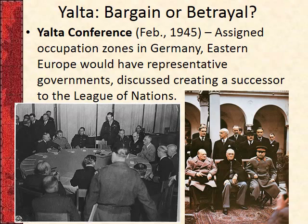Various other things were discussed — the Korean Peninsula came up, with different zones of control established there as well. Eastern Europe would be under the influence of the Soviet Union because the Soviets wanted to create a buffer between themselves and Germany — they'd been invaded twice by Germany in the previous 20 to 30 years. They also discussed replacing the dead League of Nations with something new, which later became the United Nations.